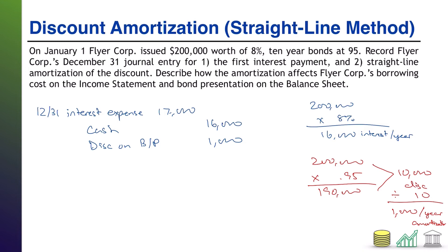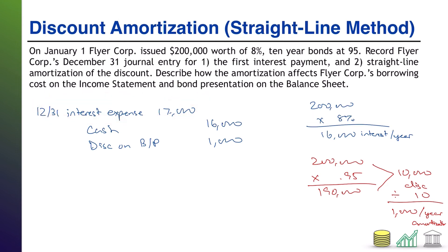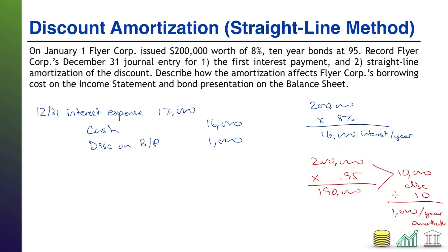Moving on to the second piece of this problem: describe how the amortization affects the borrowing cost on the income statement and the bond presentation on the balance sheet. Let's start with the income statement. Our income statement was going to show an interest expense of $16,000 absent the amortization. Now our income statement is going to show an interest expense of $17,000. So our expense on the income statement is actually higher as a result of this, which makes sense since the discount is, in essence, a cost to us where we have to pay back more than investors gave us up front.